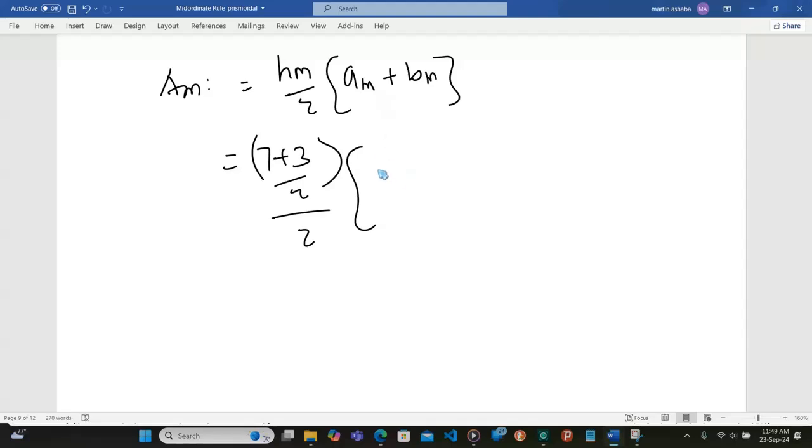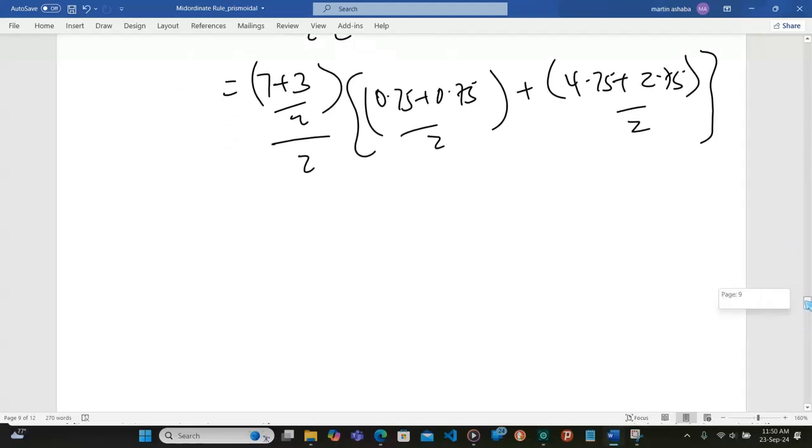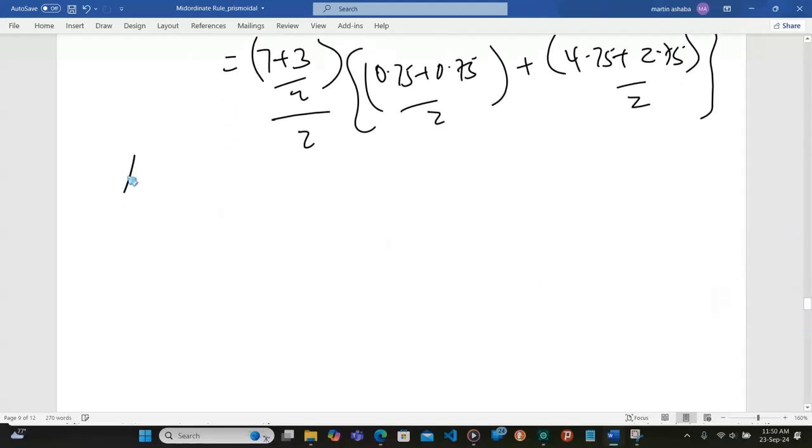We divide this by 2 into what is AM. AM is going to be the top, which is 0.75 plus 0.75 divided by 2, then we add B, which is 4.75 plus 2.75 divided by 2. We are taking the averages of those sections.